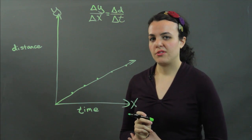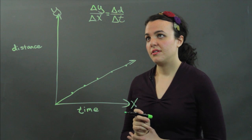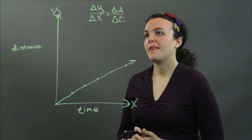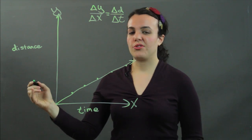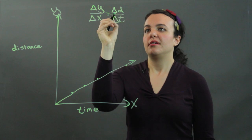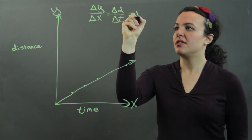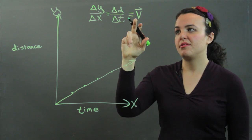Change in distance over change in time is something you're familiar with. It would be velocity, which we mark as a v.